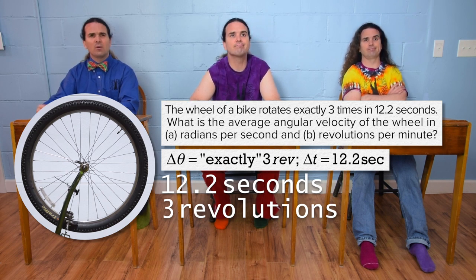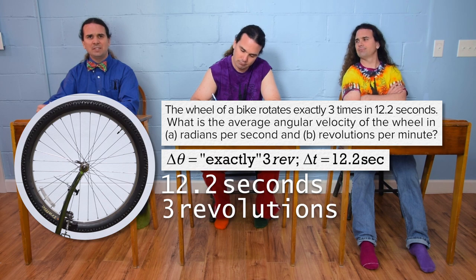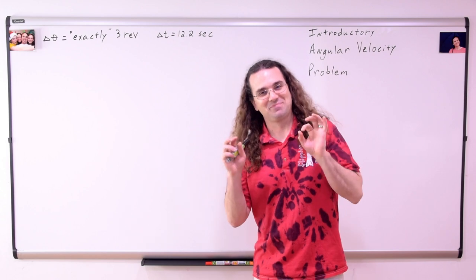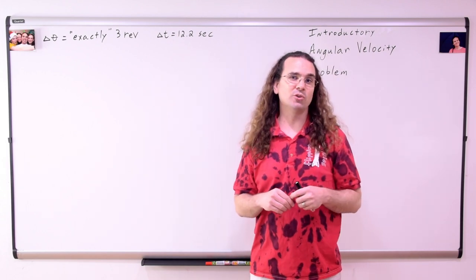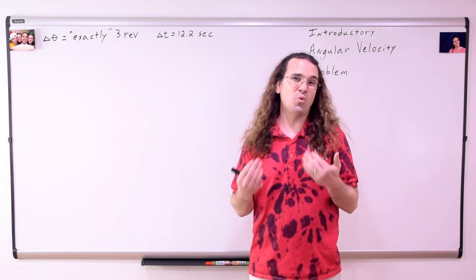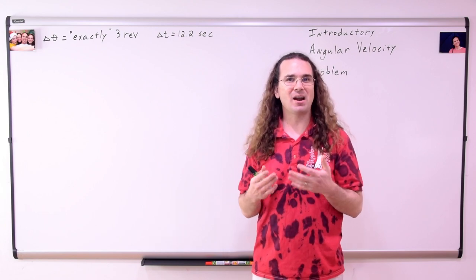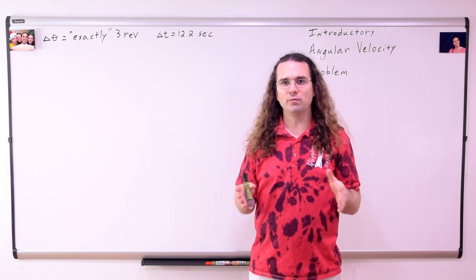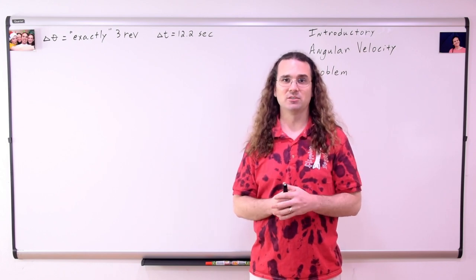Mr. P, are we really supposed to use one significant digit for three revolutions? Okay, sometimes physics problems use this word exactly when referring to a number, and we interpret that to mean the number has as many significant digits as we need it to. Hopefully, you recognize this is not possible.